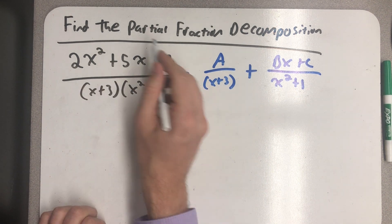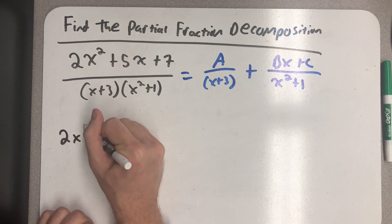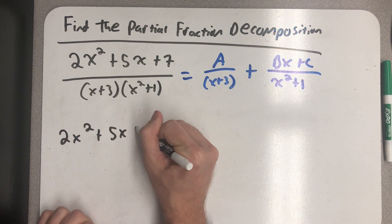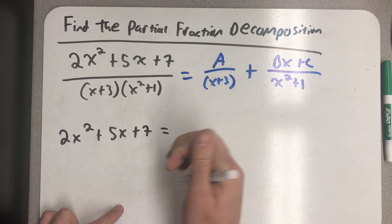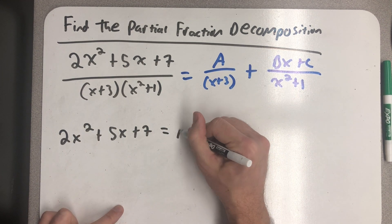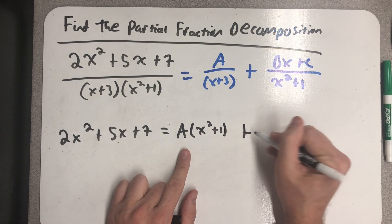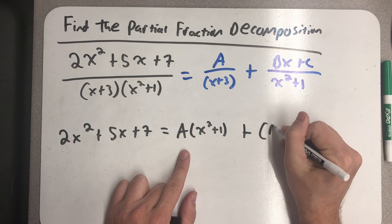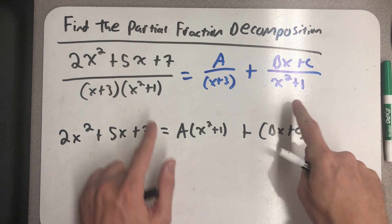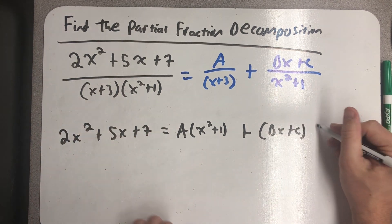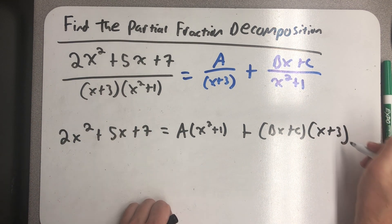Multiplying both sides by the denominator will leave me with 2x squared plus 5x plus 7 equals, the x plus 3 will cancel and leave me with an x squared plus 1 times a, plus I have that bx plus c from the numerator, the x squared plus 1s will cancel times an x plus 3.